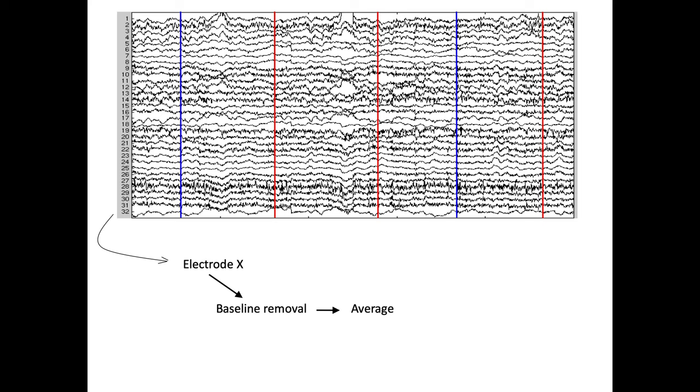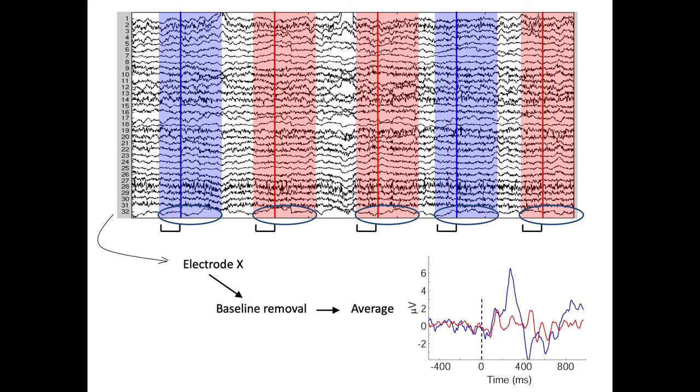For instance the type of offline processing you would do are event-related potential averages. So you take one electrode, for instance here the last one, and then you slice the signal around the stimulus of interest, either the blue one or the red one, and then you remove the baseline, so that's the part that's just preceding the stimulus. This is the period where you would remove the baseline and that's what's represented here. So then you have an average for both the blue and the red.